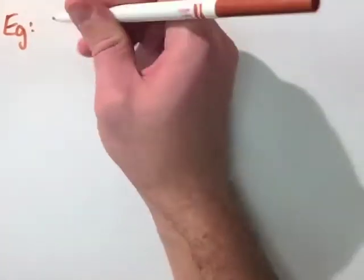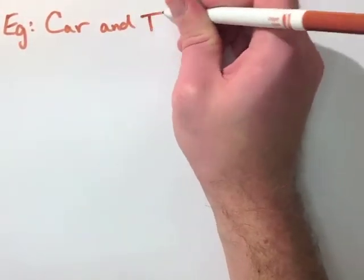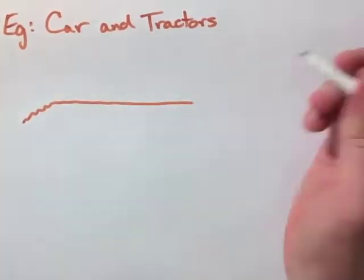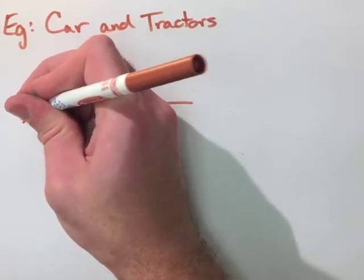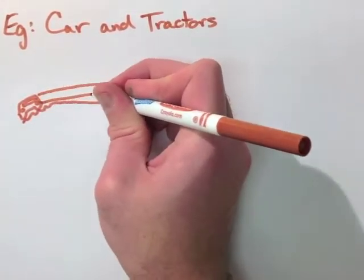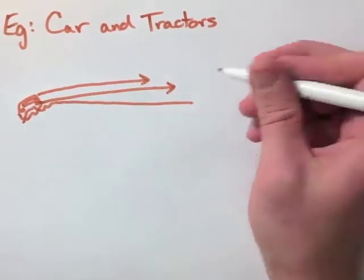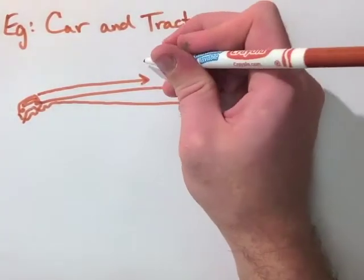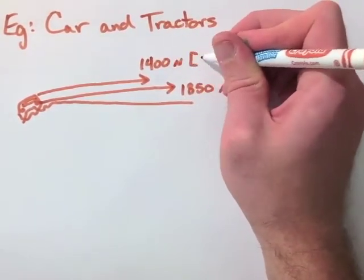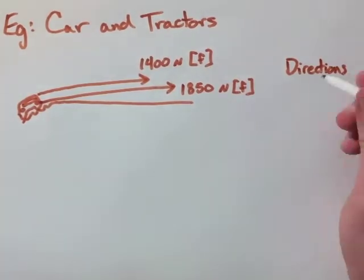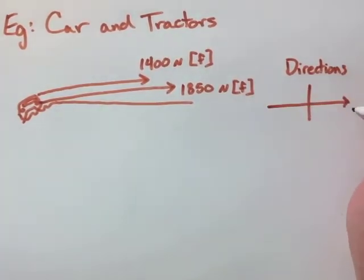Let's now look at two vectors being added in the same direction. Here we have a tractor pulling a car with another tractor out of a ditch. Now when we're pulling things, we use force, and force is measured in newtons. The two vectors are going to be done in the same direction, our first vector being 1850 newtons forward, our second vector being 1400 newtons forward.